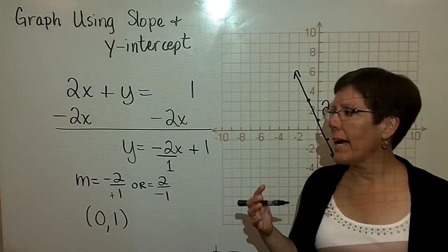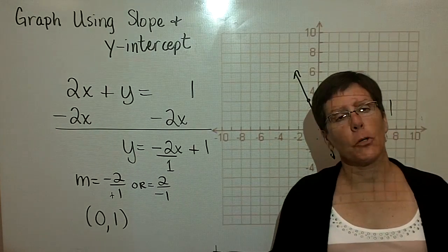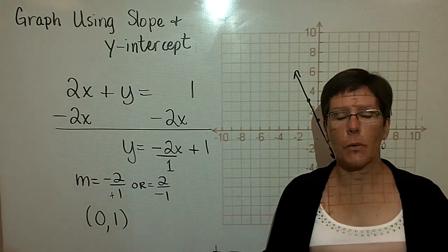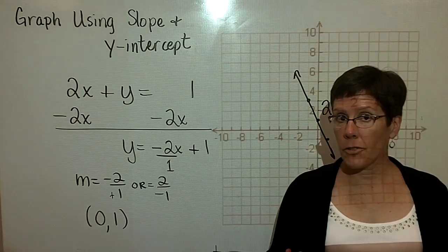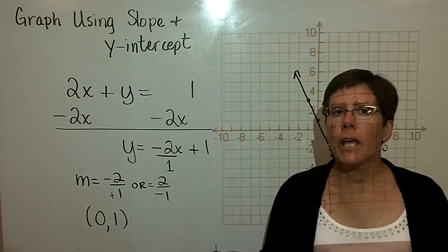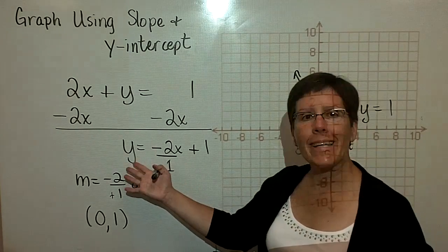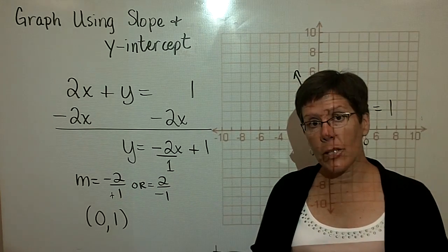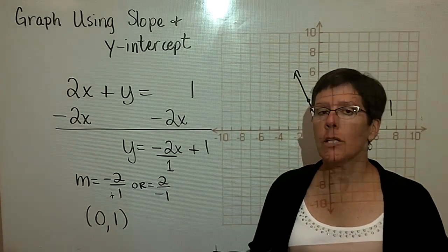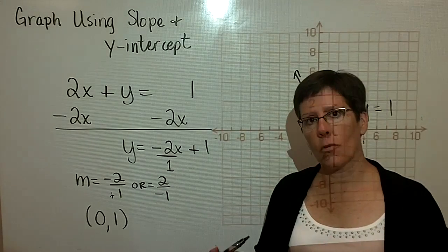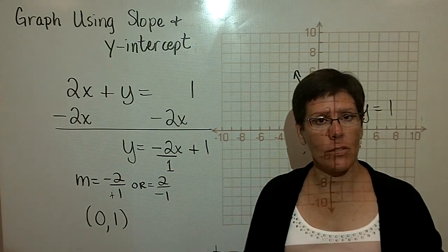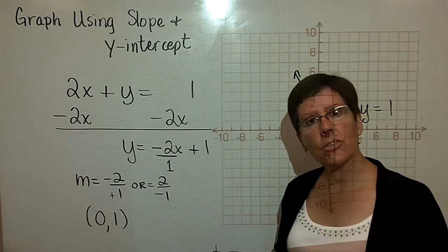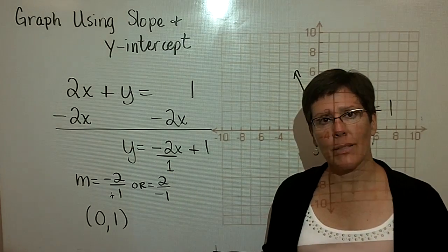We've learned how to graph by creating a list of ordered pairs. We chose to use 3 so that we could check with the third point to see if they were all in a straight line. We've learned to graph using the intercept method. And finally, we've learned to graph by getting an equation in slope-intercept form and first graphing the y-intercept and from that point moving in the y over the x direction to establish the slope of the line. I love this method. I hope you do too, and I hope you'll master this one as best as possible.